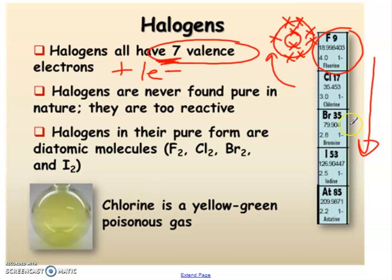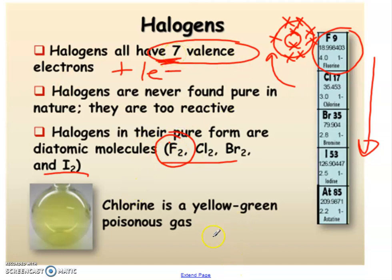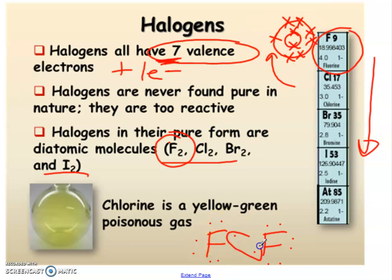Chlorine is one of our non-metals in the halogen group. Most of these halogens are actually found as diatomic molecules — fluorine F2, chlorine, bromine, and iodine. The reason they come in a pair is because of the seven valence electrons. Using the Lewis structure, here are our seven electrons for fluorine. These dots represent the valence shell of electrons, so there are seven. The electrons are being shared between the two fluorines, and they match up quite easily — two fluorines together makes a stable octet for both. Same with all of the other halogens.